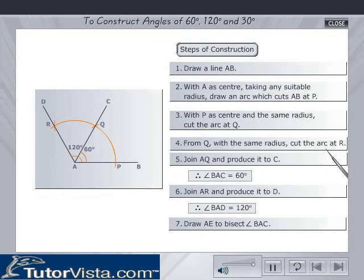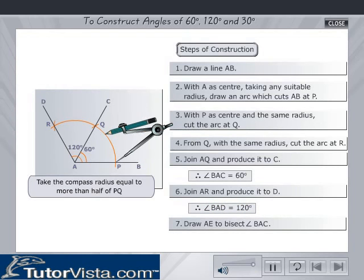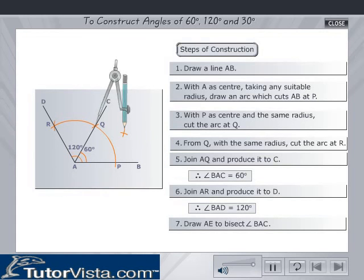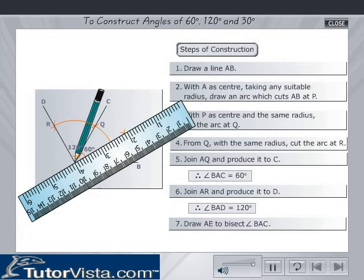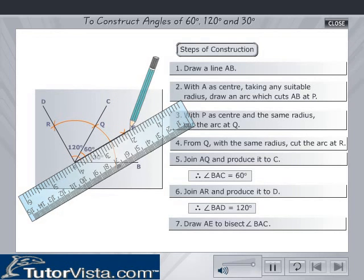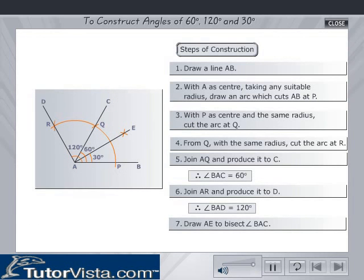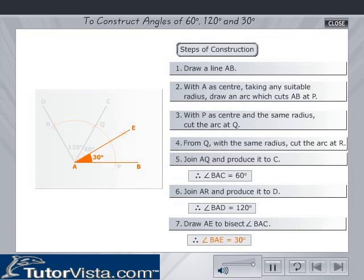Take any radius greater than half of PQ. Draw two intersecting arcs from points P and Q with the above radius. Join this point of intersection and point A, produce the line to E. AE bisects angle BAC. Hence, angle BAE is equal to 30 degrees.